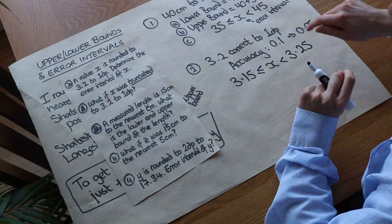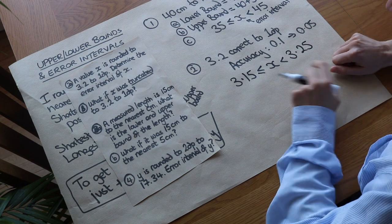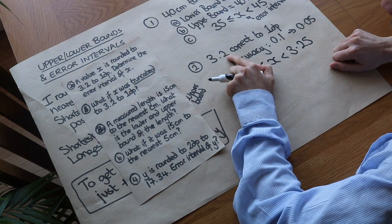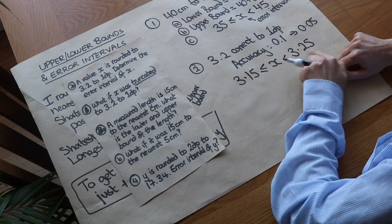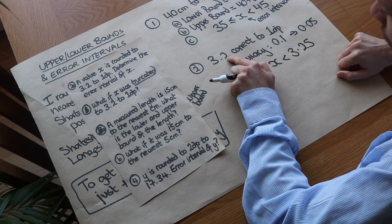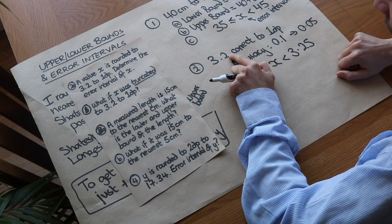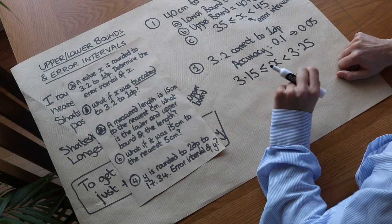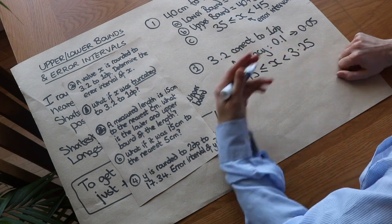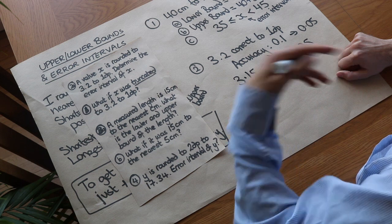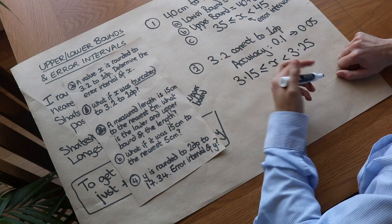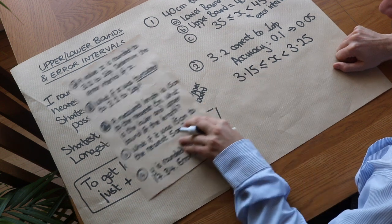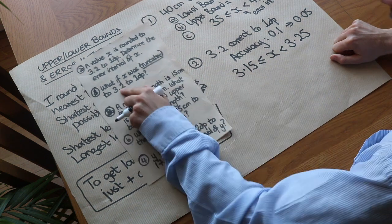That trick is not always true. It definitely works if rounding to the nearest whole number, one decimal place, two decimal places, etc. But it wouldn't be true if rounding to the nearest 5, which we'll see in a moment.